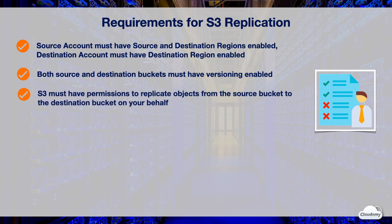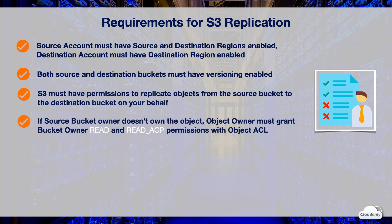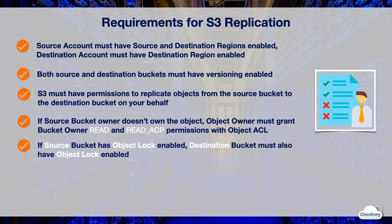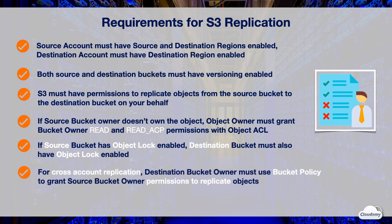S3 must have permissions to replicate objects from the source bucket to the destination bucket on your behalf. If the source bucket owner doesn't own the object in the bucket, the object owner must grant the bucket owner read and read ACP permissions with the object ACL. If the source bucket has object lock enabled, the destination bucket must also have object lock enabled. For cross-account replication, the destination account must use the bucket policy to grant the source account permissions to replicate objects.